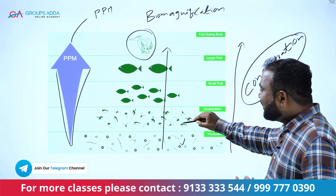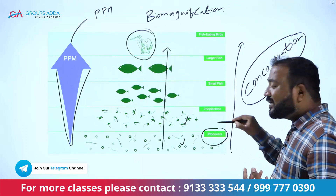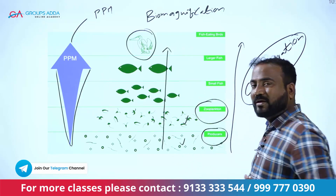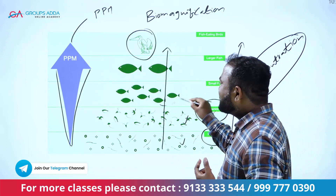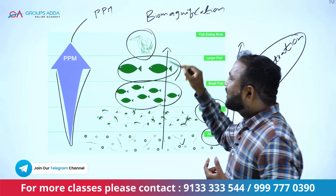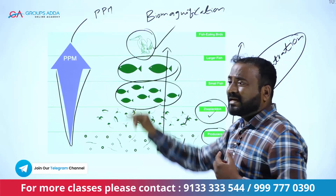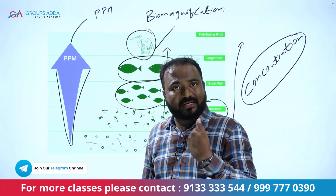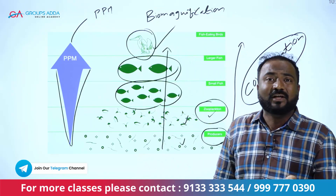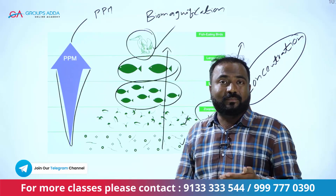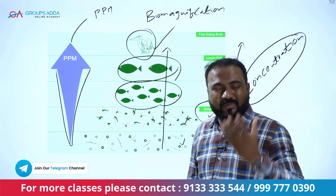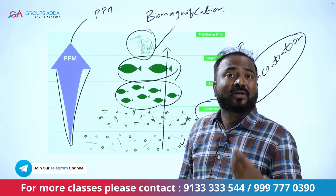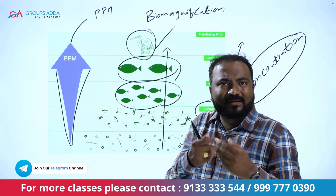Starting with producers, then zooplankton, then fish — microplastics move up through the food chain by the same biomagnification process. The concentration increases at the top. Microplastics in small plastic particles reach animals and humans through fish in aquatic ecosystems, causing damage to important body organs.